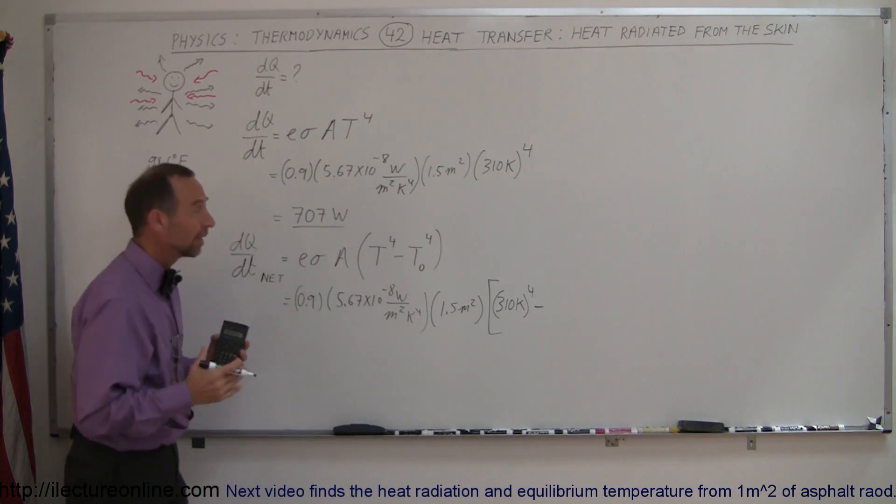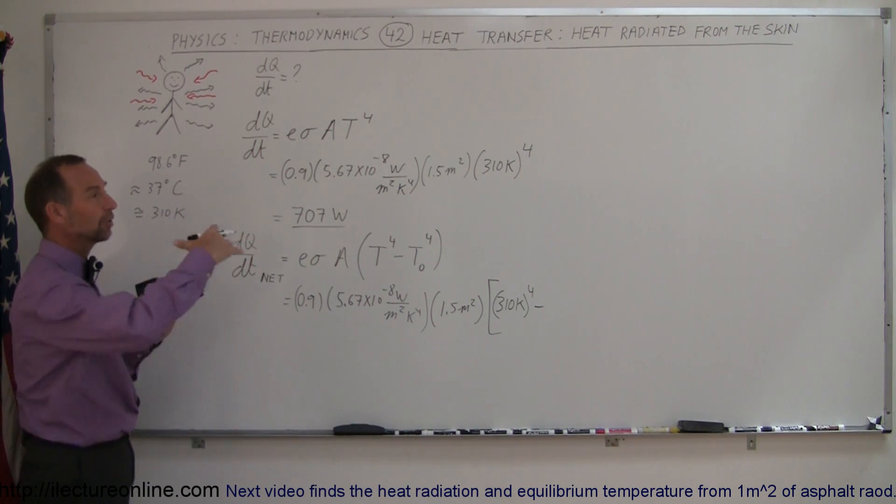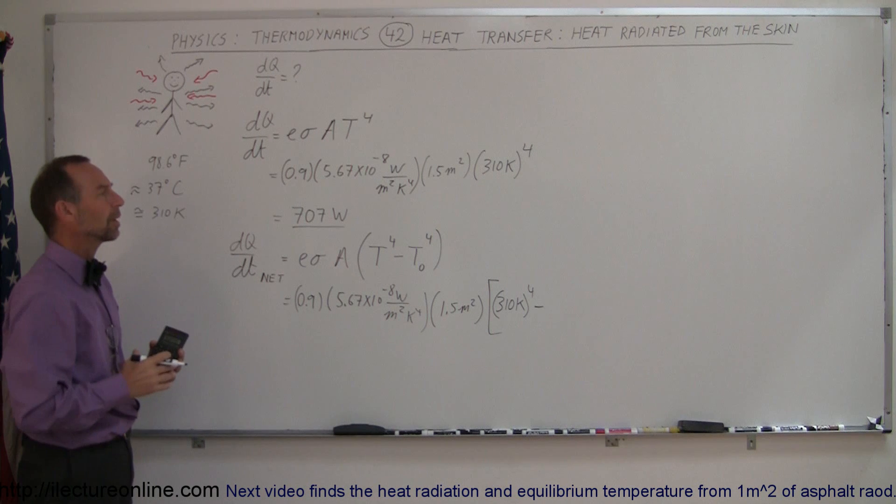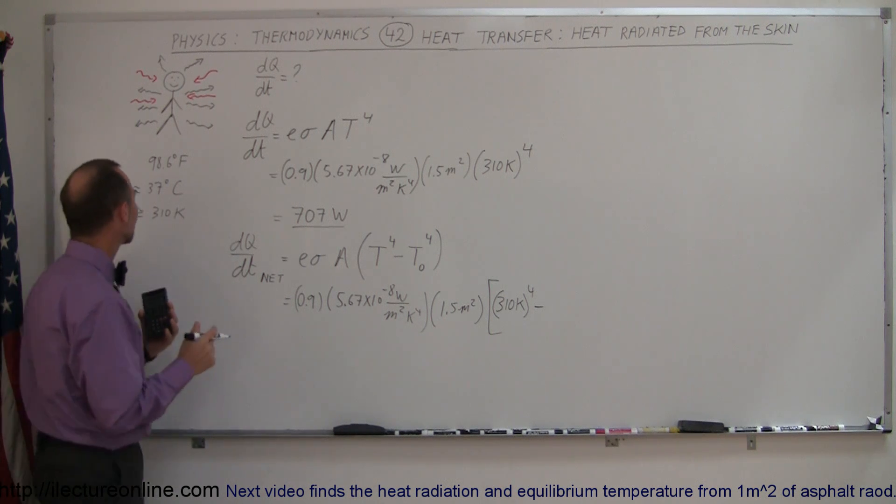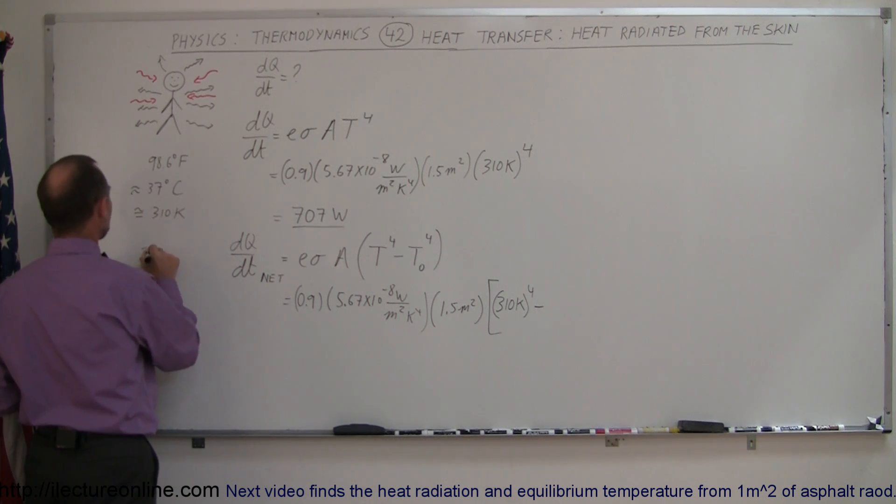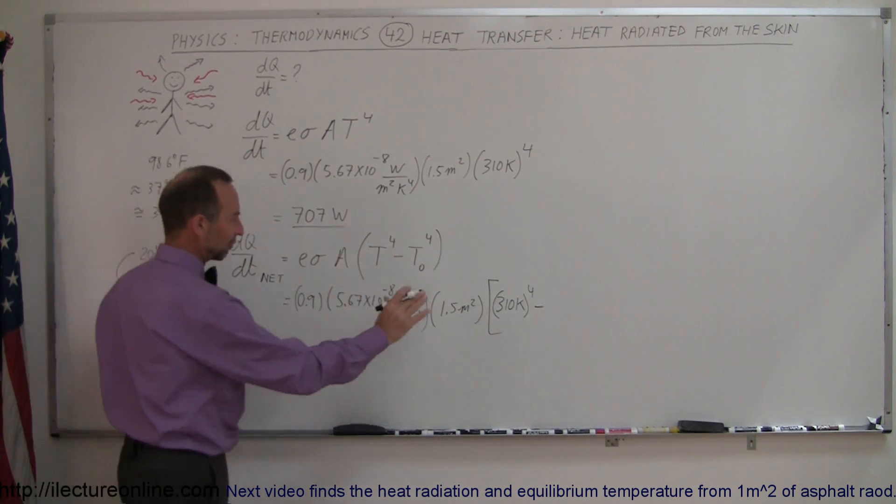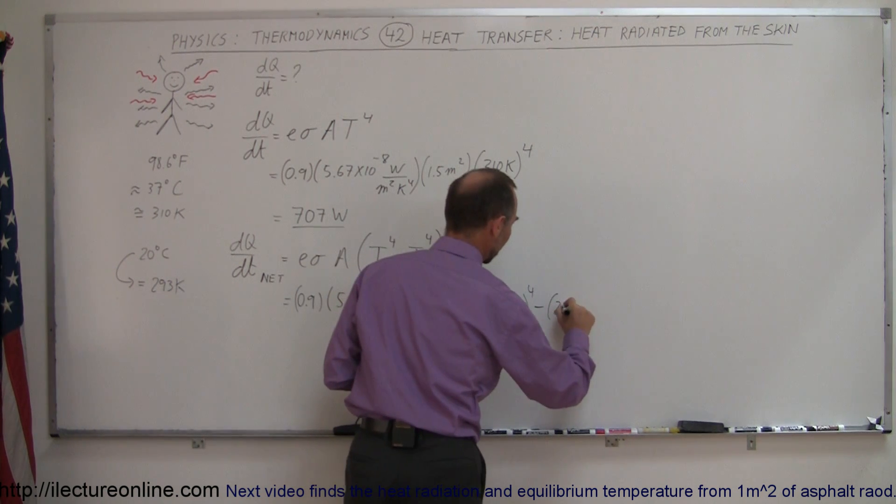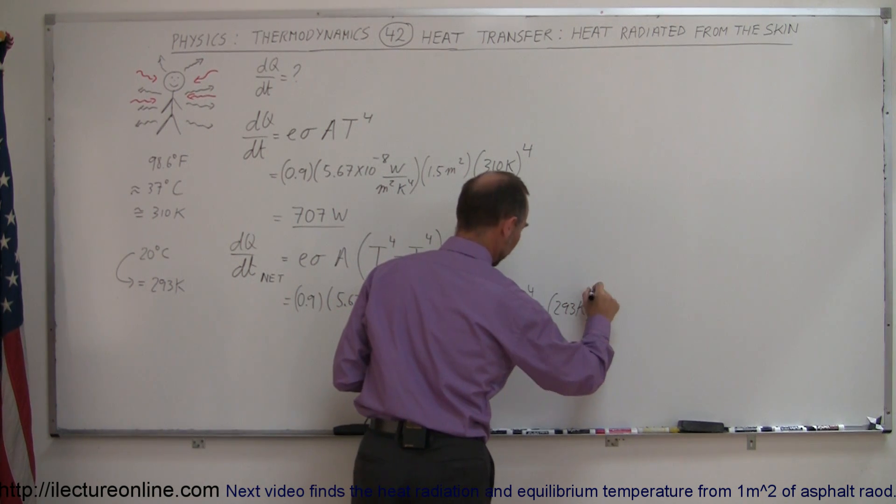And we're going to then subtract the temperature of the environment. If you're in a room, the walls typically would be at room temperature, let's say 20 degrees centigrade. At 20 degrees centigrade, that is equal to about 293 Kelvin, and that we have to place in here. So 293 Kelvin, also to the 4th power, and that would then be the net energy lost by the body.